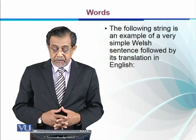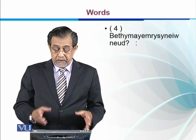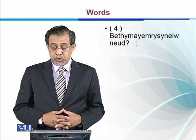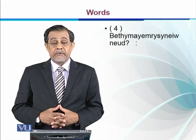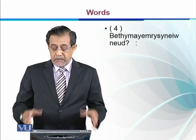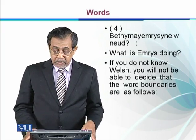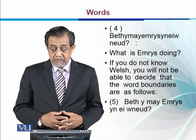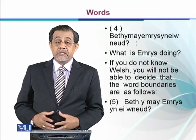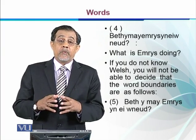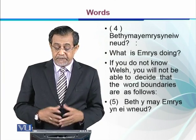If you do not know a language, you will find it impossible to identify the word boundaries in even the simplest sentences. For example, if we have a string of words in a Welsh sentence, we cannot give boundaries to these jumbled letters — we cannot know where the first word starts and where it ends because we are not familiar with Welsh. Its translation is 'what is Emrage doing?' but its actual word boundaries are: 'Beth yw mae Emres yn ei wneud.' Since we did not know the boundaries, we could not segregate the words in that string of letters.